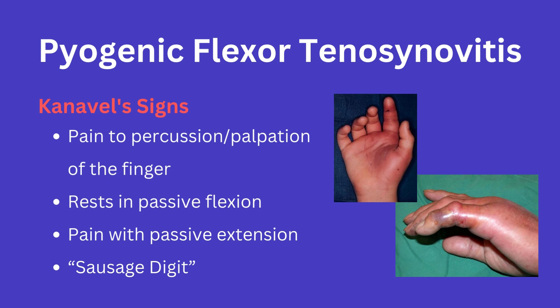PFT is commonly treated with immediate antibiotics, namely vancomycin or ceftriaxone. However, antibiotic choice may vary depending on current standards, cultures, and mechanism of injury. Irrigation and debridement is also commonly performed, but amputation may also be necessary depending on the severity.